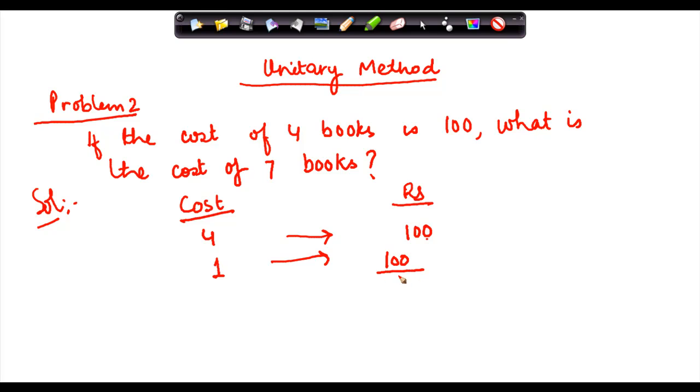So, hundred divided by four. Now, I divide both of them by two. I would get two here, I get fifty here. Again, two. I get twenty-five here, I get one. So, cost of one book is rupees twenty-five.